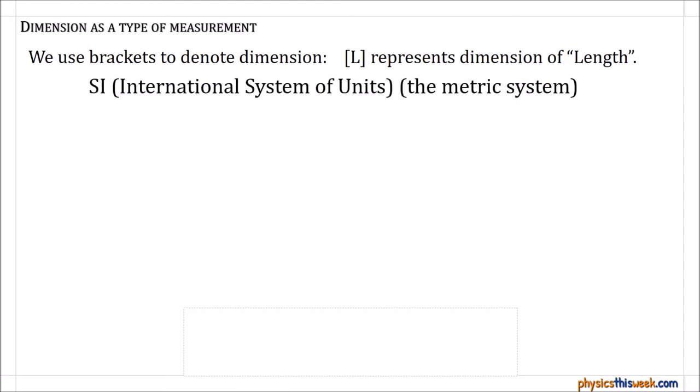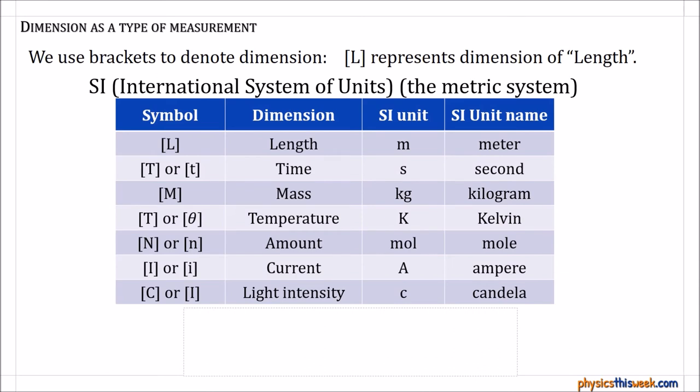Now this leads us to the SI, or the International System of Units, also known as the metric system. And in this system of measurement, there are actually 1, 2, 3, 4, 5, 6, 7 base measurements.